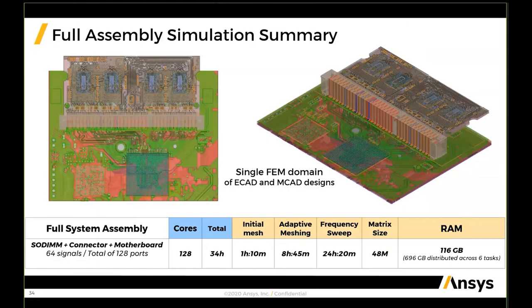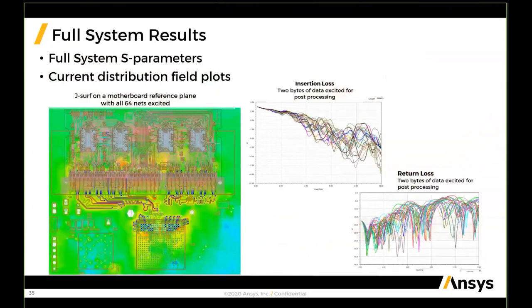Our next step is to view the results. We are presenting S-parameters — looking at two bytes of insertion loss and return loss data. Similarly, we can look at specific field plots. At the bottom left, there's a plot of current distribution on the motherboard reference plane underneath the connector with all 64 nets excited. You can see how the current is spreading on the first neighboring reference plane of the assembly model.